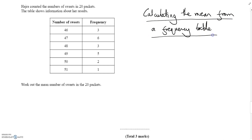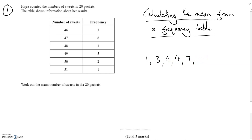Keep your notes nice and neat and underline your title. This is question one - you should be able to find this attached to the task, so you can print it off and use the questions or have them next to you. The question says someone counted the number of sweets in 20 packets and the table shows information about her results. Sometimes rather than having individual numbers written out in ascending order, it's easier to put this into a table.